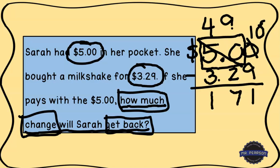Because this is a money problem, I'm going to drop my decimal — in my class we call it 'drop it like it's hot' — and then put our dollar sign. So if Sarah pays for her three dollar and twenty-nine cent milkshake with her five dollars, she's going to get one dollar and seventy-one cents back in change. As an added bonus, one dollar and seventy-one cents would most likely be a one-dollar bill, two quarters, two dimes, and one penny — that would be the smallest amount of change she could get back. This is Mr. Pearson with another word problem, and we'll see you next time!